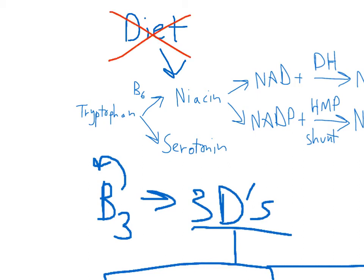Another thing that can cause less niacin is a disease called Hartnup syndrome, when you're unable to reabsorb tryptophan in the kidney tubules. If you don't have tryptophan, then you won't have niacin.